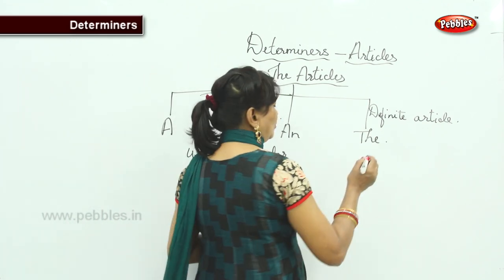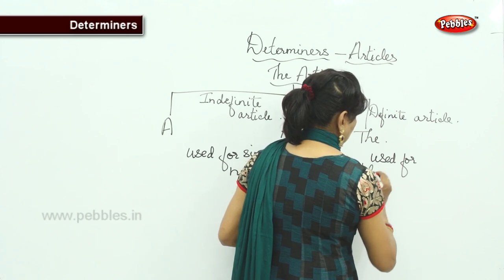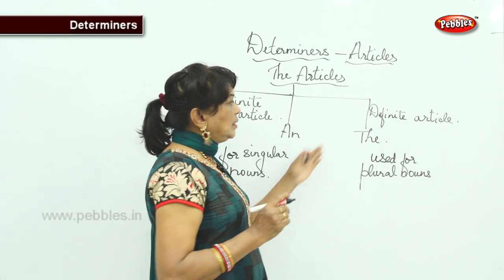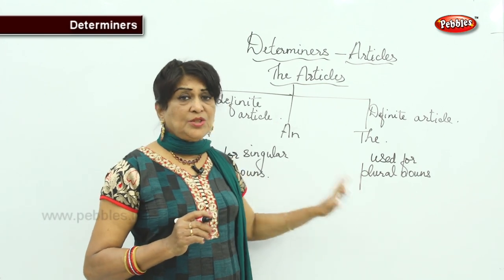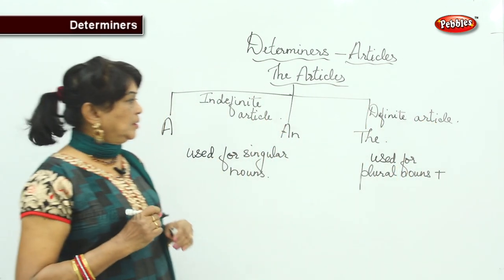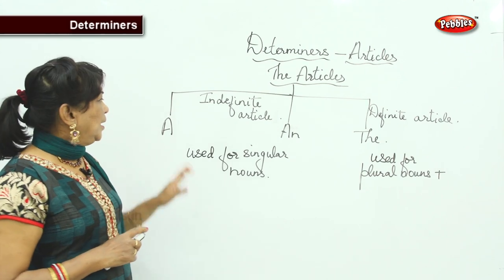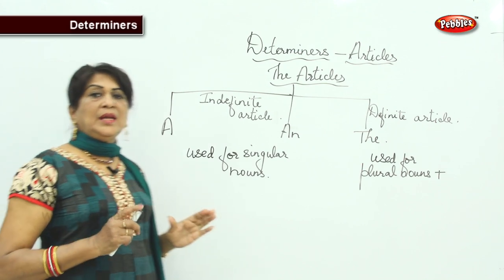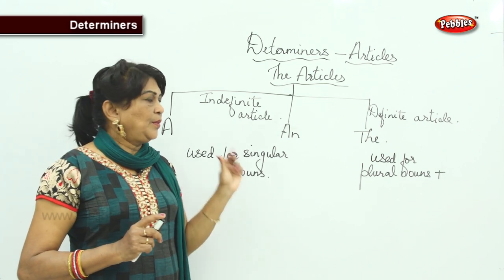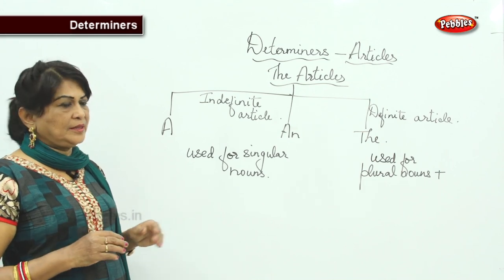'The' is used for plural nouns and also has many other usages which we'll cover. Indefinite article 'a' is used before words beginning with a consonant sound, and 'an' is used before words beginning with a vowel sound. Take down this tree diagram and I am going to explain each and every article for you.